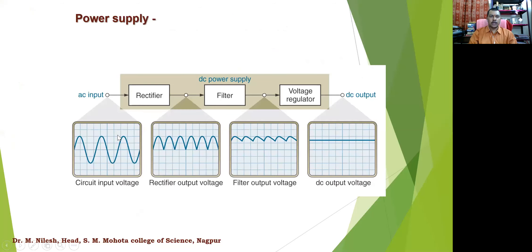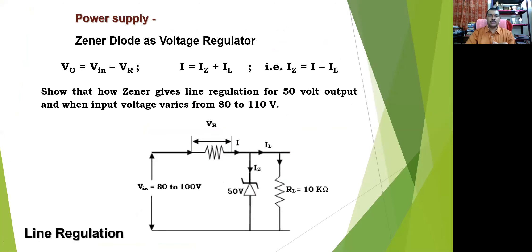We have studied how we use an AC input given to a rectifier, then to a filter, and then to a voltage regulator. We have done this up till now, and we have to start with the Zener diode as a voltage regulator — how a Zener diode works as a voltage regulator.